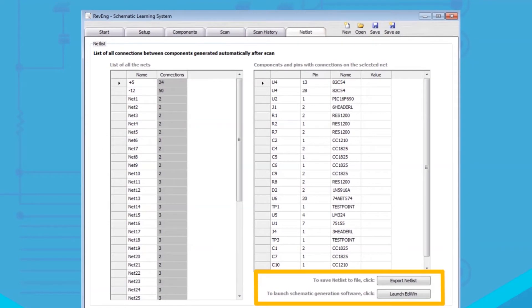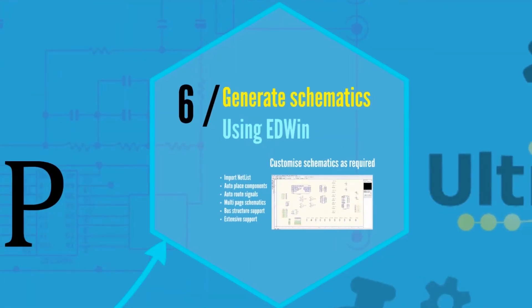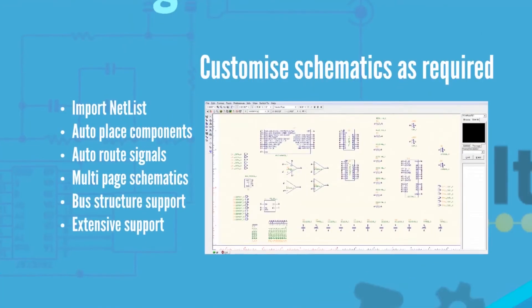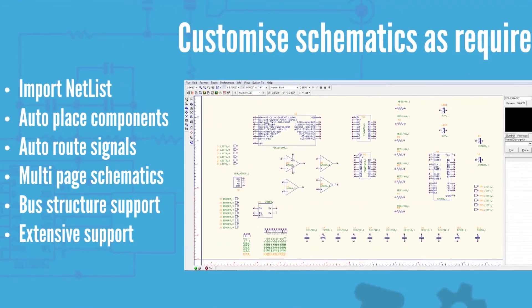When ready to proceed, click Export Netlist to save it as a text file. Click Launch Edwin to run the EDA CAD tool and import the netlist. Now that the netlist has been imported into the Edwin schematic editor software, you will be able to customize your PCB schematic as required.